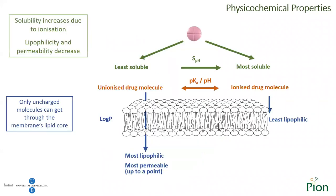The ionization constant, or pKa, defines the transition between the neutral and ionized molecule, making a profound difference to the way it behaves in solution as well as in the human body. For example, the neutral form is less soluble than the ionized form. Also, the neutral form is more lipophilic than the ionized form, meaning that it dissolves better in oils and fats than it does in water.